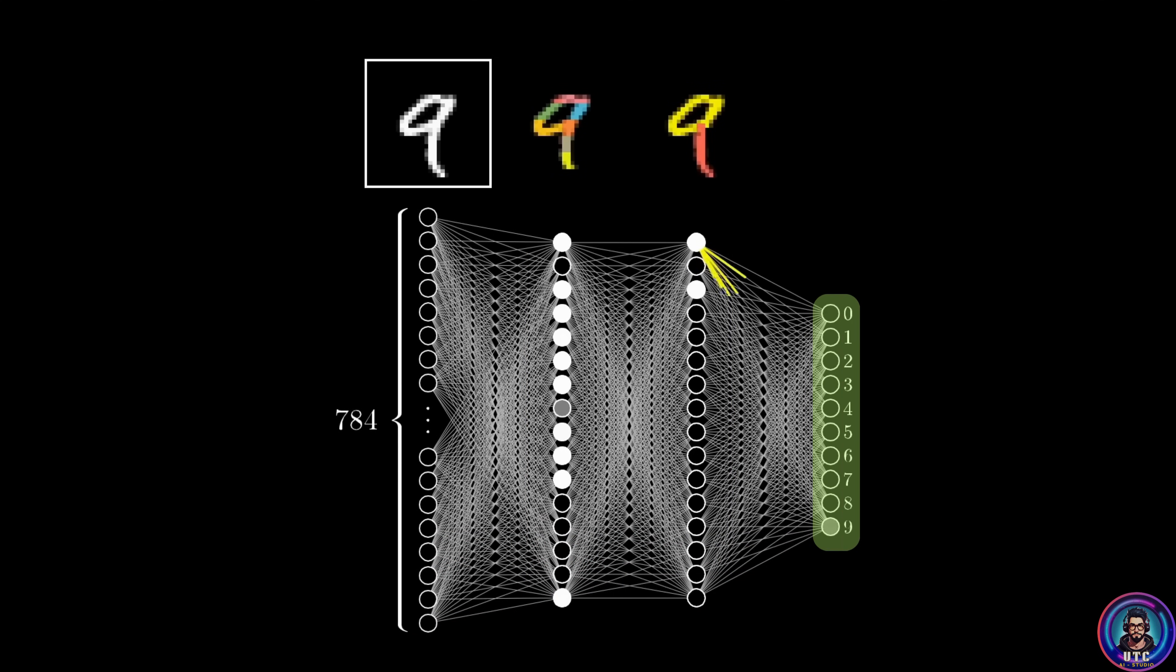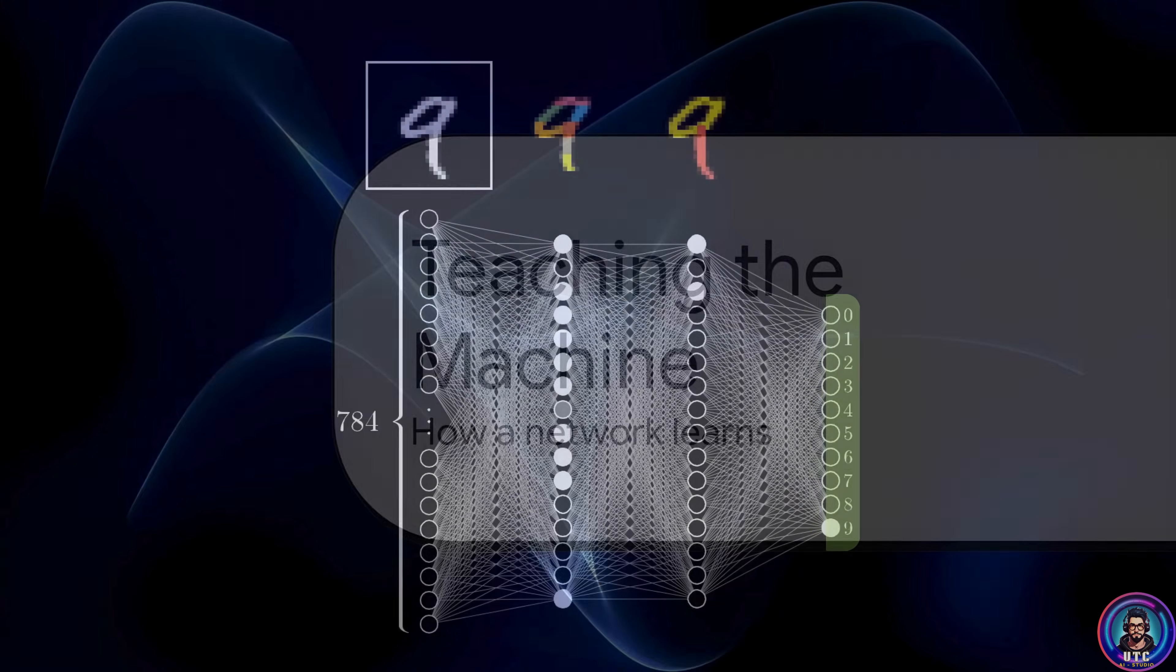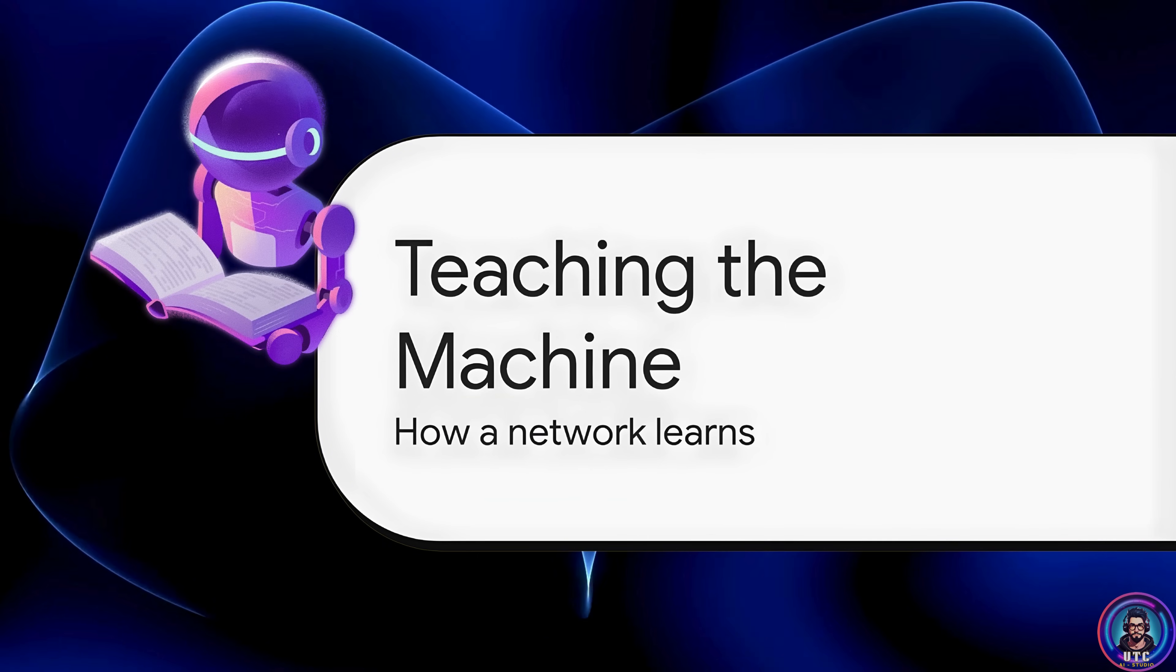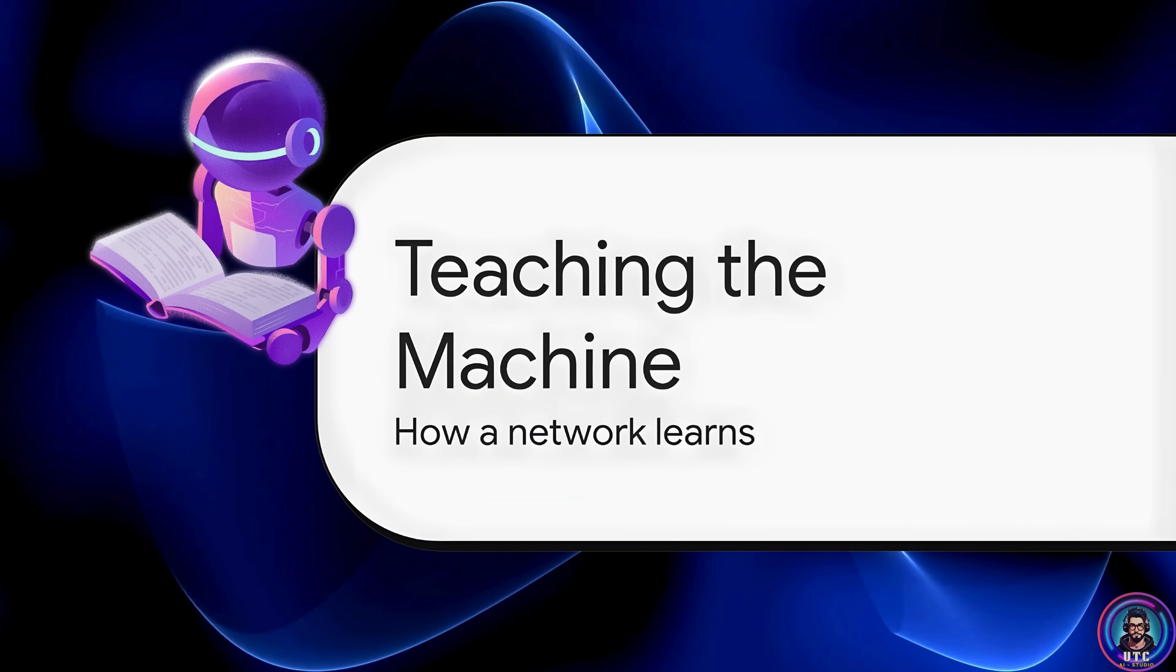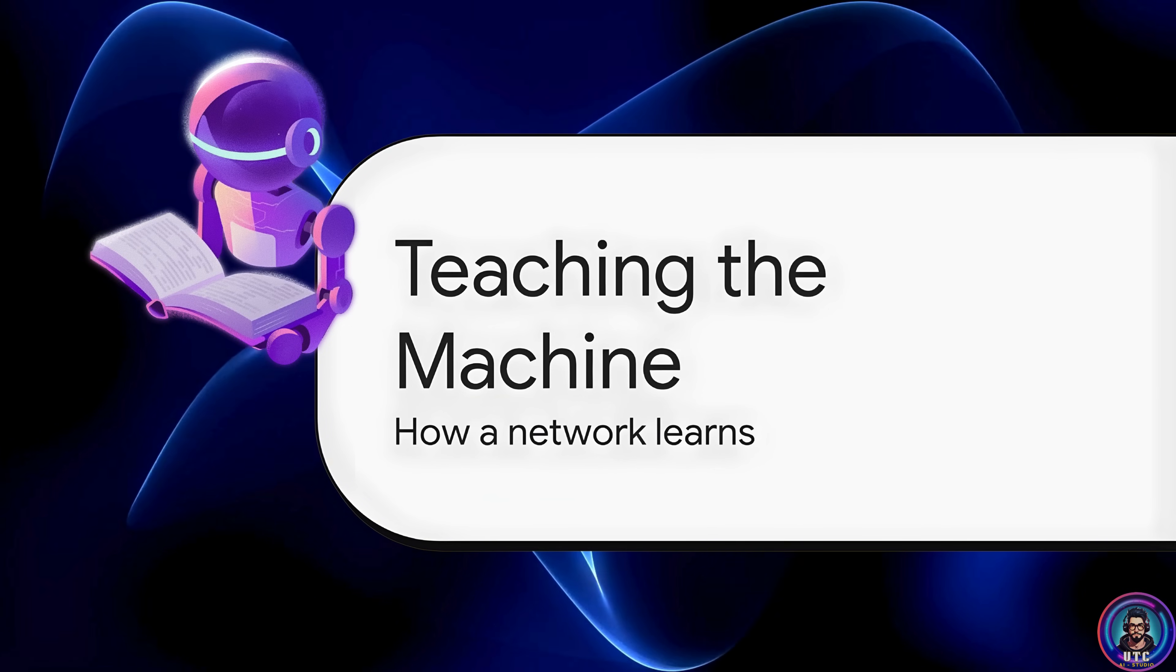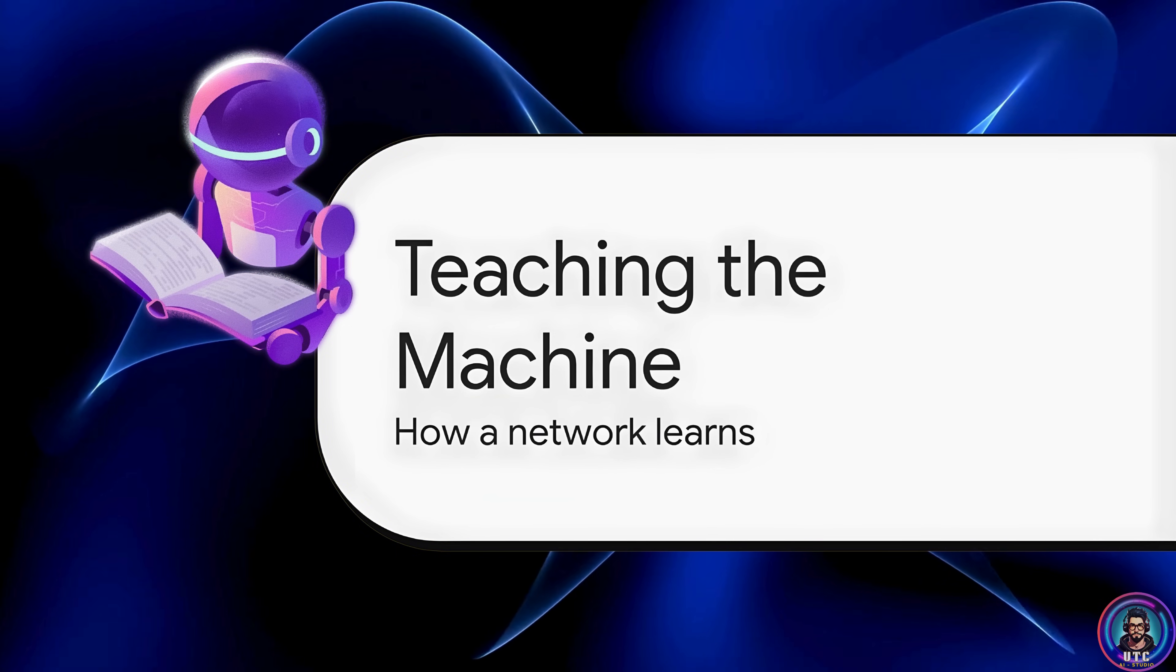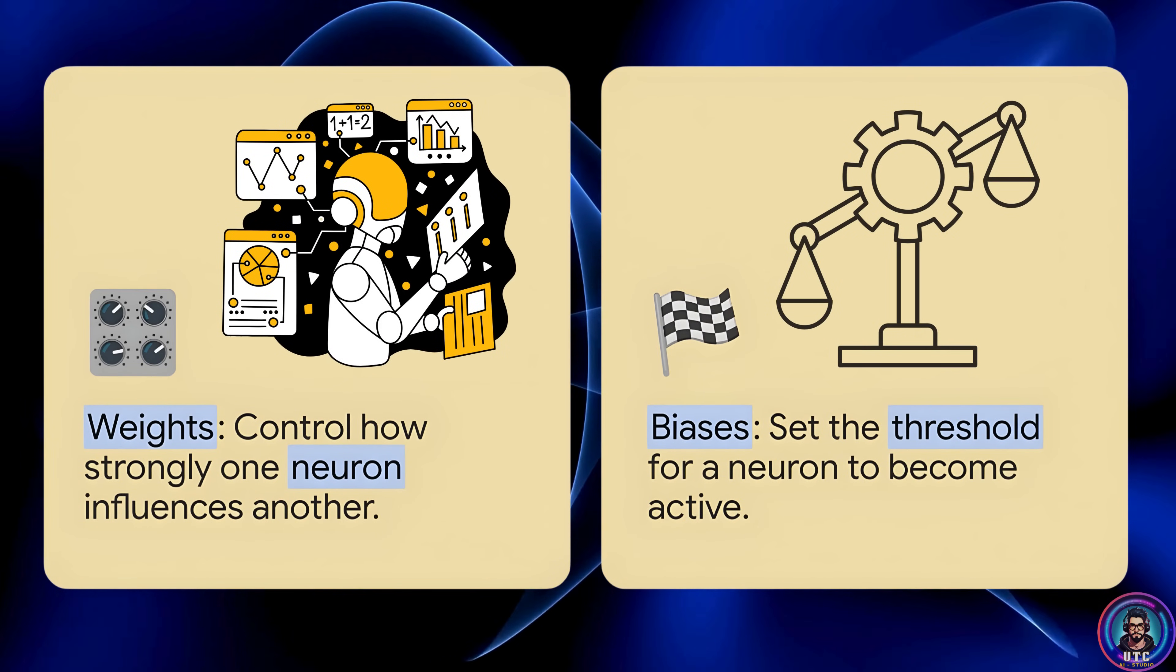And then finally, the output layer takes those components, the loops and the lines and puts it all together. It learns that a pattern of an upper loop connected to a long vertical line. Well, that's a nine. It's incredible. We've got this amazing structure that can theoretically see a digit by building up patterns. But how does it learn which connections are the right ones? How does it figure out that these edges make a loop? And that loop and line combo make a nine? Well, that's where the whole process of training comes in.